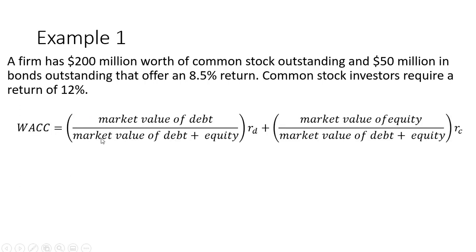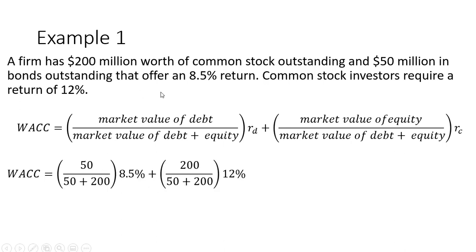The market value of debt divided by the market value of debt plus equity: $50 million divided by $200 million plus $50 million, multiplied by the rate of return on the bonds, 8.5%. Then the market value of equity: $200 million divided by $250 million, multiplied by the 12% required return for common stockholders.